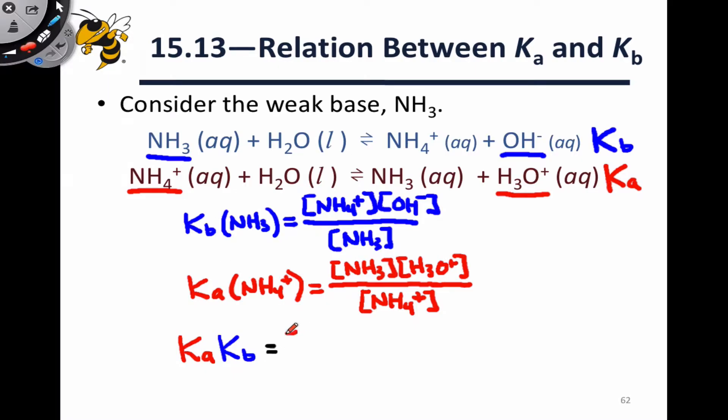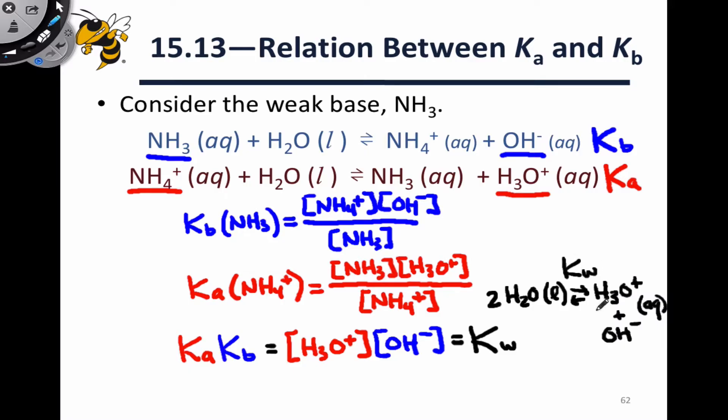All we're going to be left with is the hydronium concentration term from the Ka expression and the hydroxide ion term from the Kb expression. But this equilibrium expression involving only hydronium and hydroxide concentrations should look very familiar. This is the equilibrium expression for the self-ionization of water. The chemical equation here is two water molecules in liquid form forming hydronium and hydroxide, both aqueous. And so the equilibrium expression for this reaction is indeed concentration of H3O+ at equilibrium times the concentration of hydroxide at equilibrium, and that's equal to Kw.